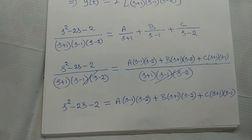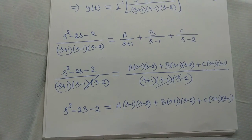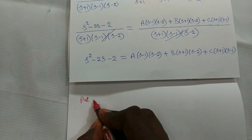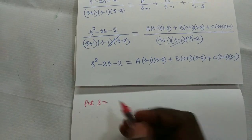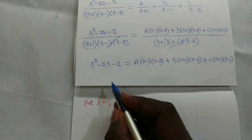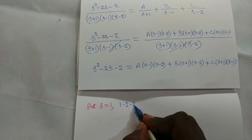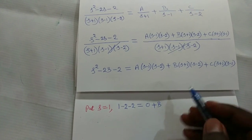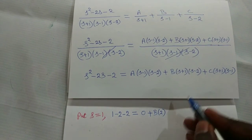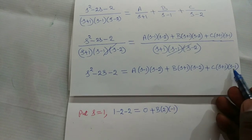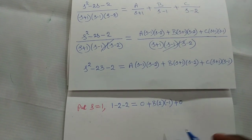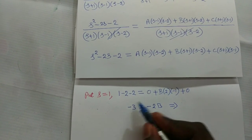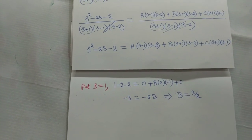To find B, put s equal to 1. The A-term and C-term become zero. So 1 − 2 − 2 equals minus 3, which equals B·(1+1)·(1−2) equals B·2·(−1) equals −2B. Therefore minus 3 equals minus 2B, which implies B equals 3/2.